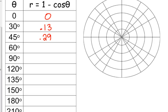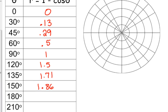0.13. 45? 0.29. 60? 0.5. 90? One. 120 degrees: 1.5. 135: 1.71. 150: 1.86. 180? 2. And 210? 1.87. Okay, so let's graph this, see what we get. 0, 0, that's a point at the pole. 30 degrees, 0.13, that doesn't go too far out from the pole there. 45 degrees, 0.29, a little bit further out. 60 degrees, 0.5, so we're kind of starting to curl around here.